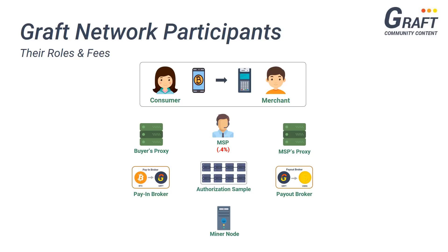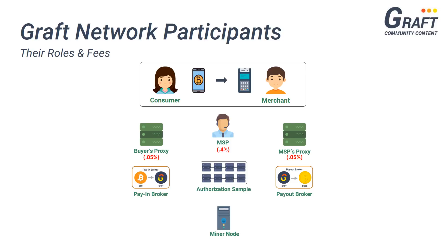In order for a buyer's wallet or a merchant's terminal to communicate with the rest of the payment network, each of these devices will first have to connect to their corresponding proxy supernodes. Proxy supernodes allow communication between mobile wallets or merchant terminals and the rest of the payment network, and charge a fee of 0.05% each every time a transaction is processed. Even though a buyer's wallet requires communication with the network and its corresponding proxy supernode charges a fee, the fee is still paid for by the merchant along with all other fees.